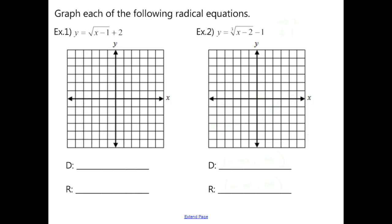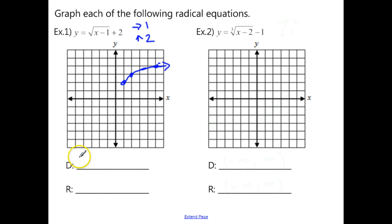Now let's work through examples. Example 1 has a horizontal shift right 1 and a vertical shift up 2. We take the critical point (0, 0) and move it right 1, up 2. Then from that new origin the next points are (1, 1) and (4, 2) shifted accordingly. The domain is [1, ∞) and the range is [2, ∞).